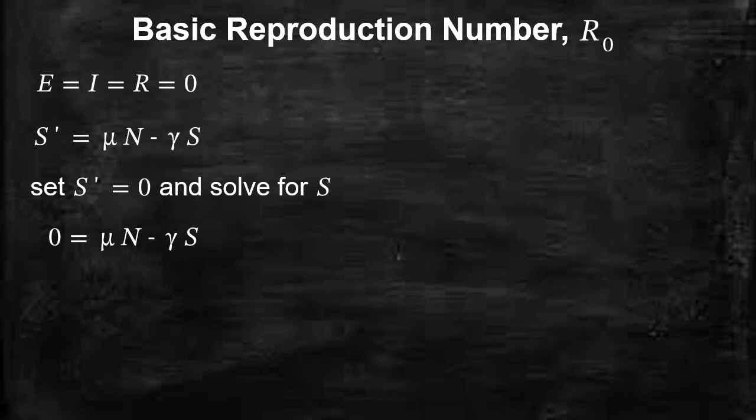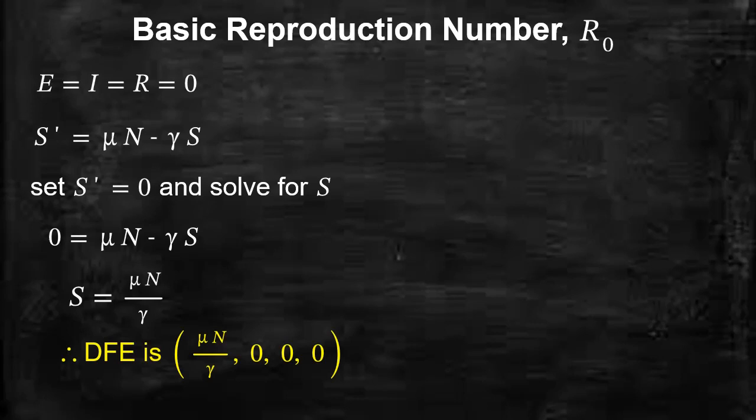you will end up with S equal to μN over γ. So the disease-free equilibrium will have the S component as μN/γ, and E, I, and R are all set to zero. This is the disease-free equilibrium.